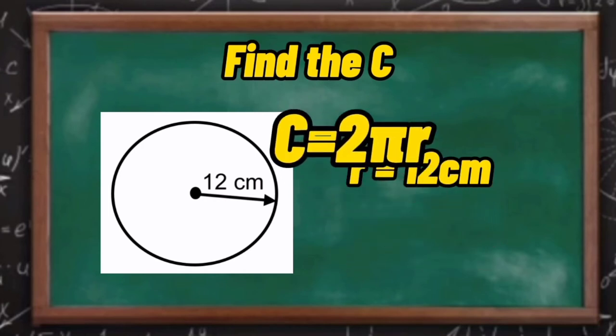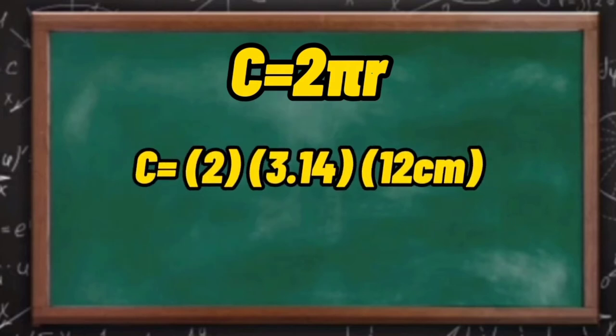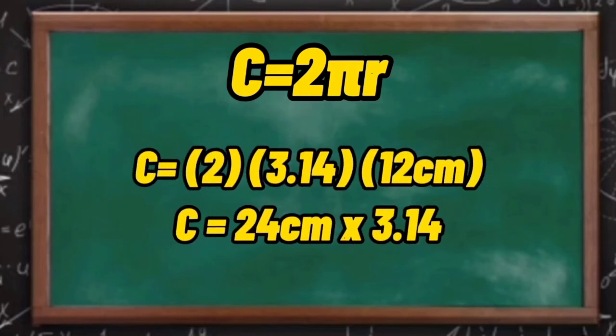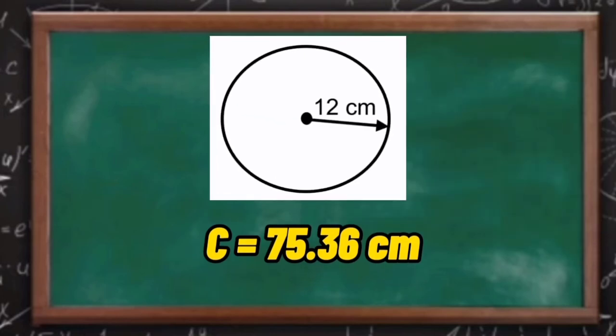To compute, just substitute the given using the formula. Then, solve for it. Now, we already have the answer. The circumference of this circle with a radius of 12 cm is 75.36 cm.